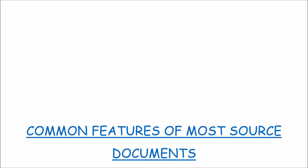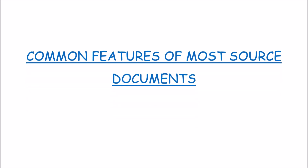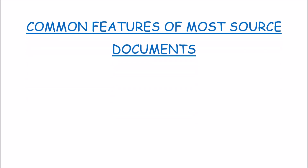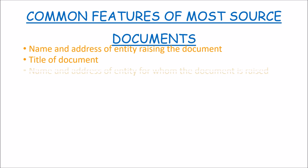To wrap this up, let's point out the common features on most source documents. Most source documents have the name and address of the entity raising the document, the title of the document, the name and address of the entity for whom the document is raised, the date for which it is raised, the amount involved in the transaction both in figures and in words, details of the transactions involved, and the name and signature of the preparer, reviewer, and authorizing or receiving official.